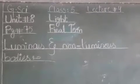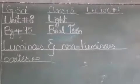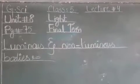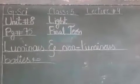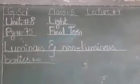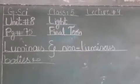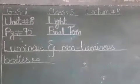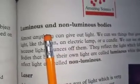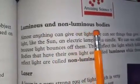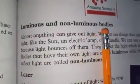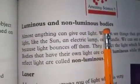اب sun جب نکلتے ہیں وہ زمین سے ٹکراتے ہیں، تو زمین ہمارے پاس روشن ہو جاتی ہے۔ تو Earth ہمارے پاس non-luminous ہے۔ Now look at your book — luminous and non-luminous bodies. چمکدار اور غیر چمکدار چیزیں۔